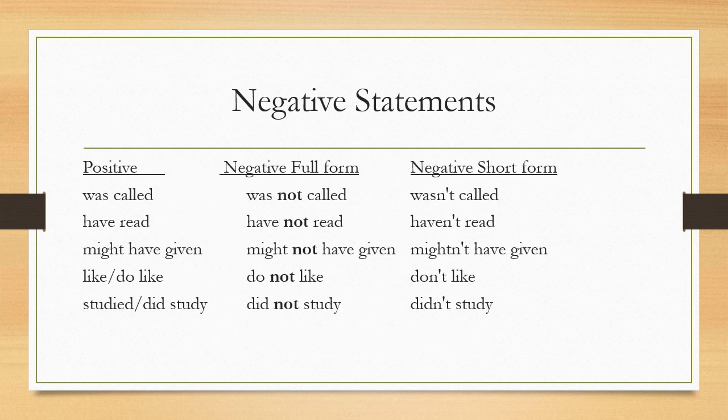Let's look at some examples. Was called — the negative form would be was not called, and the shortened form would be wasn't called. Have read — have not read — haven't read. Might have given — might not have given — mightn't have given. Do like — do not like — don't like. Did study — did not study — or didn't study.